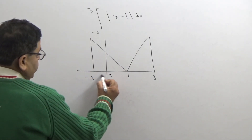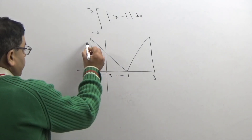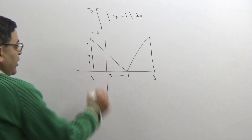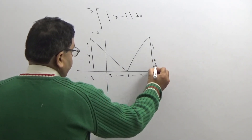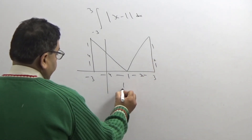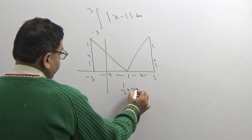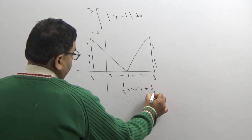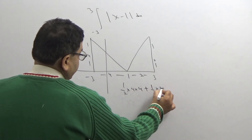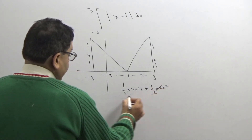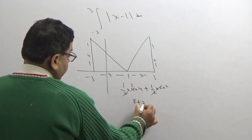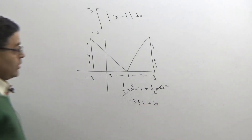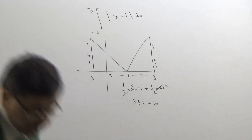The base is 4 units so the perpendicular is also 4 units. On the right side, base is 2 units and perpendicular is also 2 units. So the area of this question is ½×4×4 + ½×2×2 = 8 + 2 = 10. Within seconds you can get your answer.